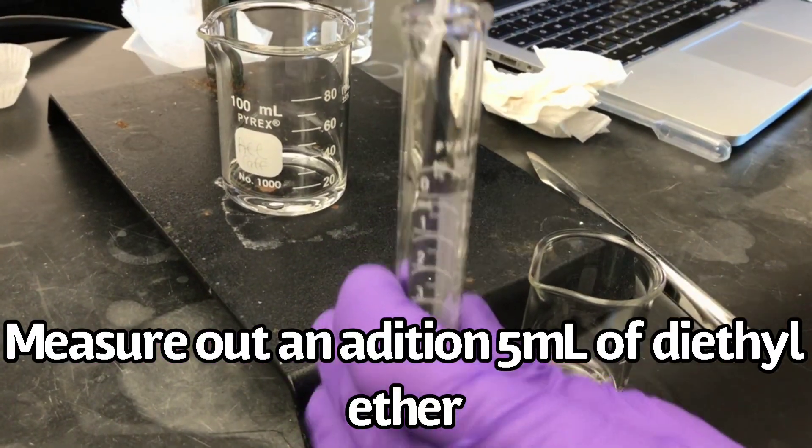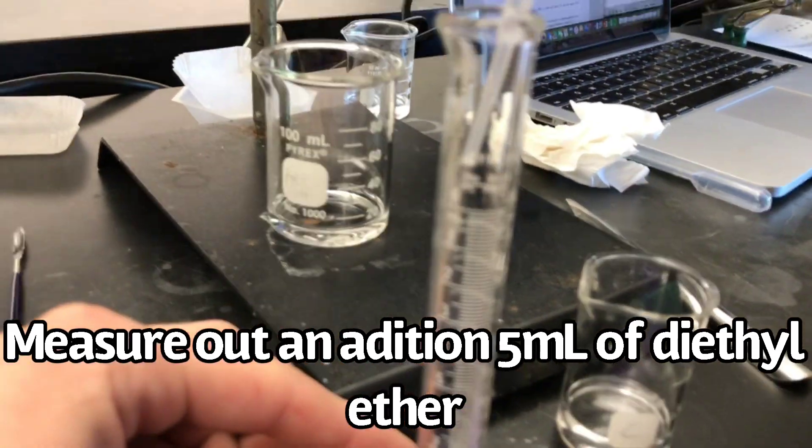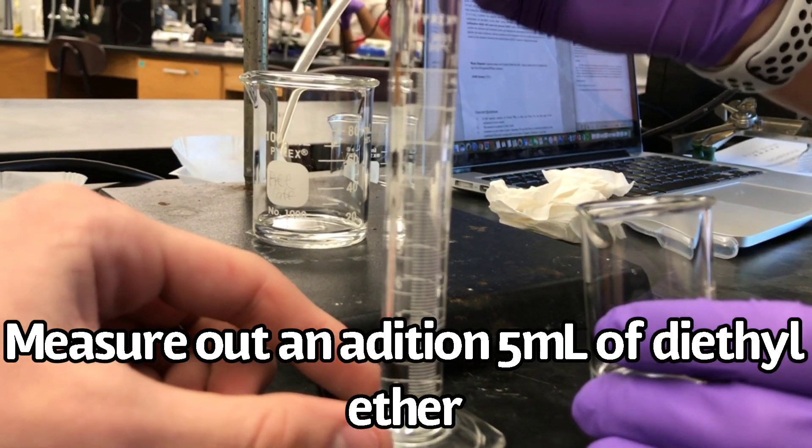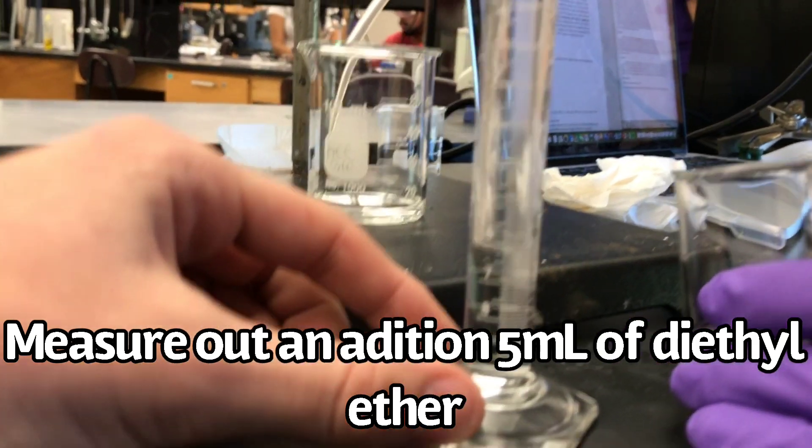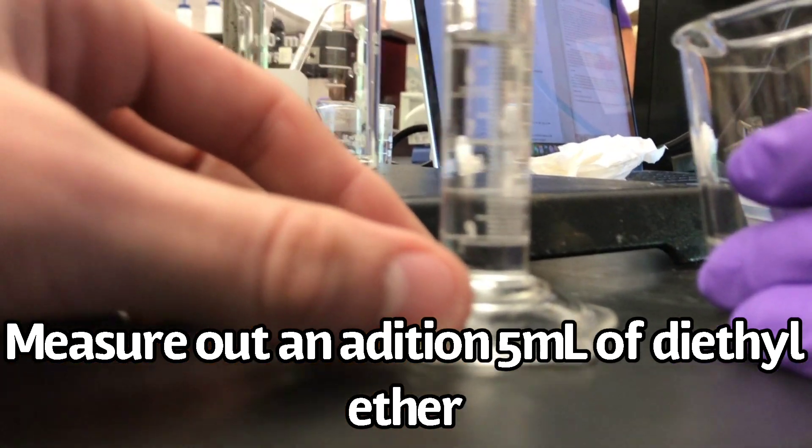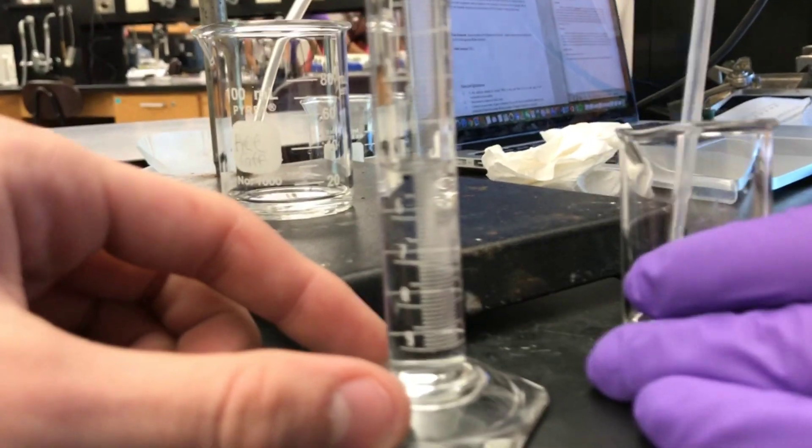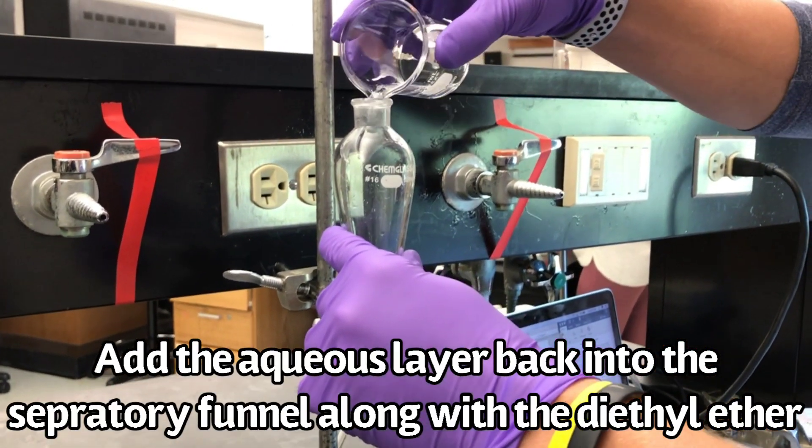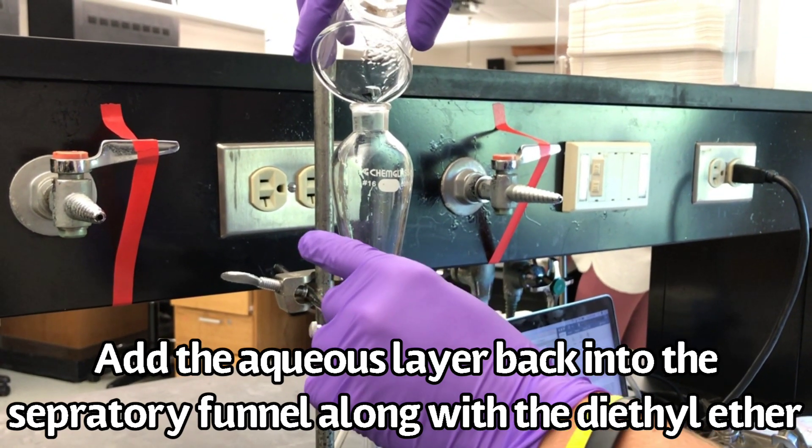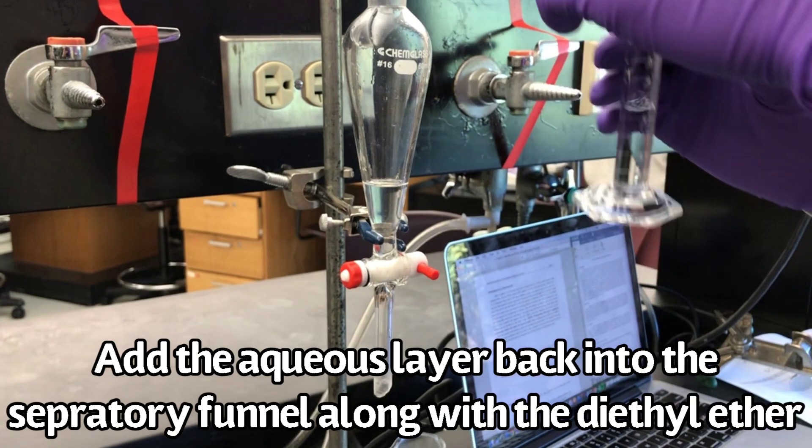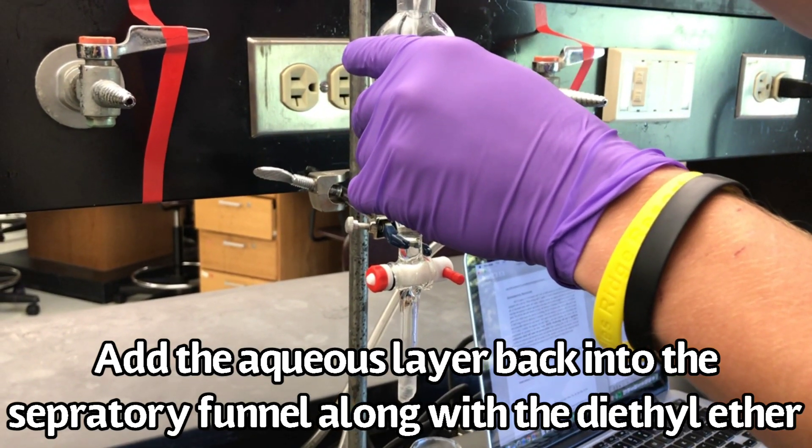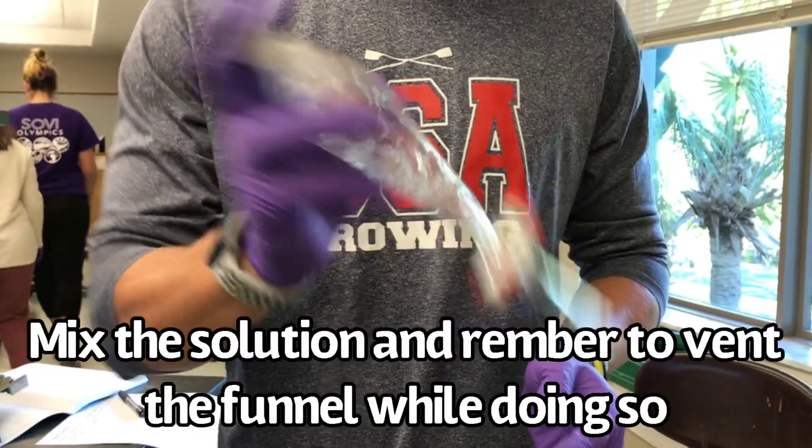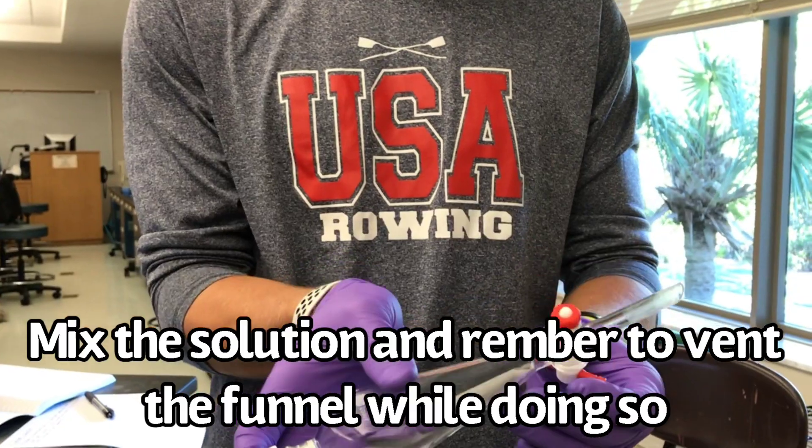Measure out an additional 5 milliliters of diethyl ether. Add your lower aqueous layer back into the separatory funnel along with the diethyl ether. Mix the solution and remember to vent the funnel while doing so.